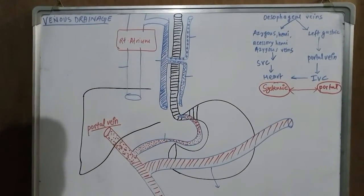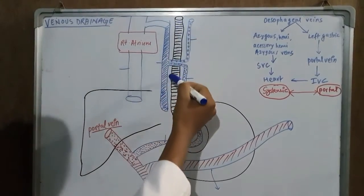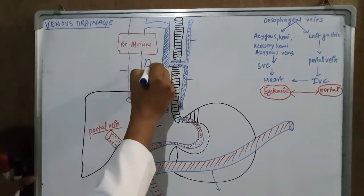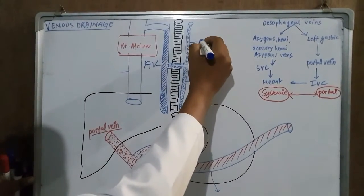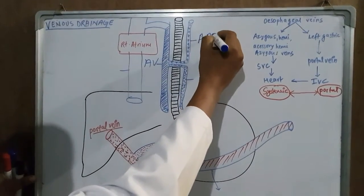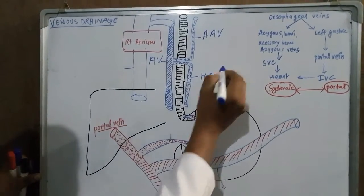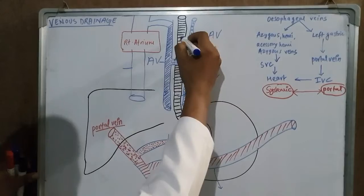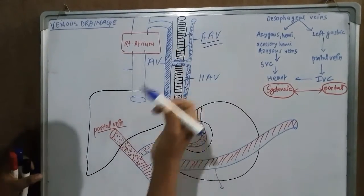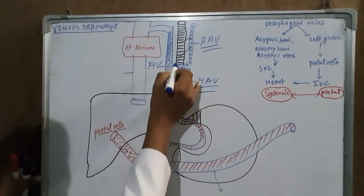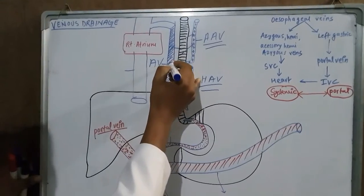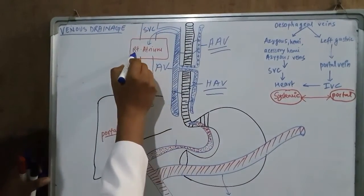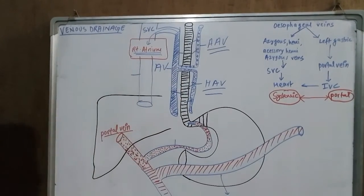Now the venous drainage of the oesophagus. On the sides of the oesophagus there are the azygous vein on the right side and the accessory hemiazygous vein on the left side. The oesophagus drains into the accessory hemiazygous vein, the hemiazygous vein, and the azygous vein, which ultimately drains into the superior vena cava and then to the right atrium.